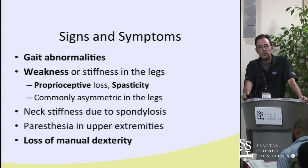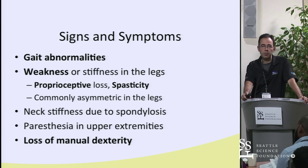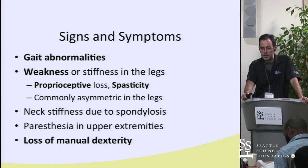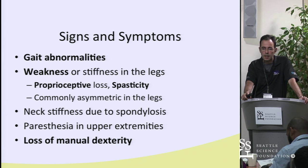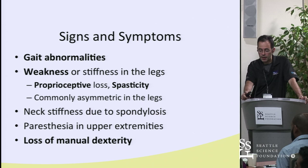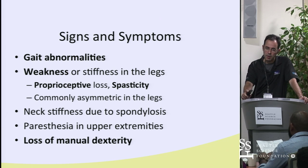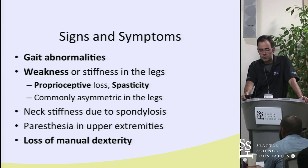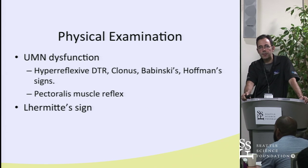Typical signs and symptoms of myelopathy include gait abnormalities, weakness, proprioceptive loss, spasticity, and loss of manual dexterity. You can orient history questions to subtleties patients may not recognize — have they had increased difficulty buttoning buttons or with handwriting? These are subtle clues that in retrospect are leading to myelopathic symptoms.